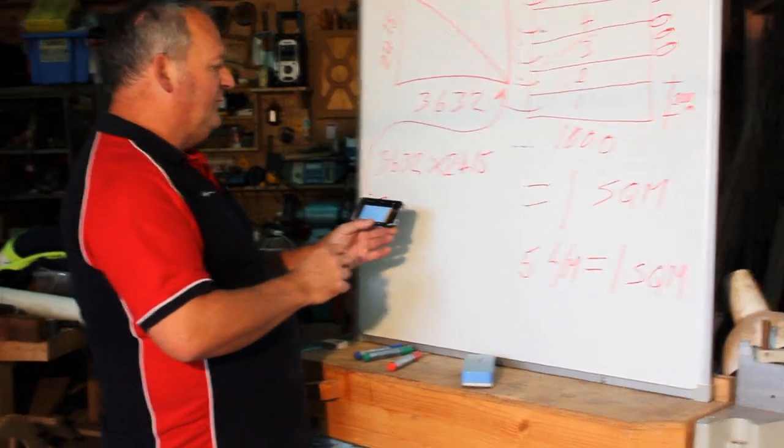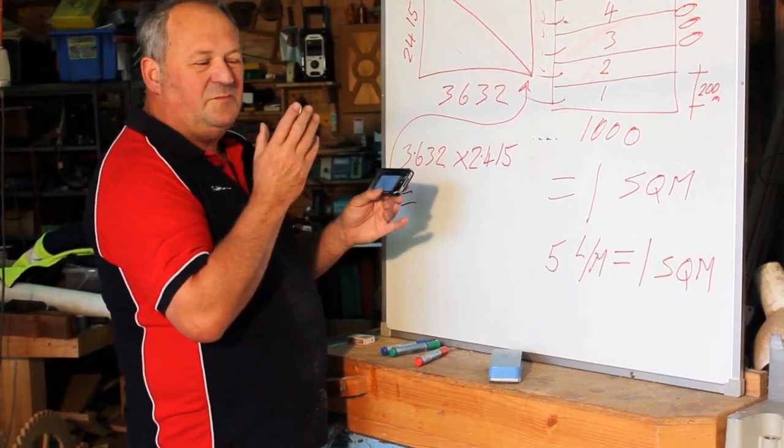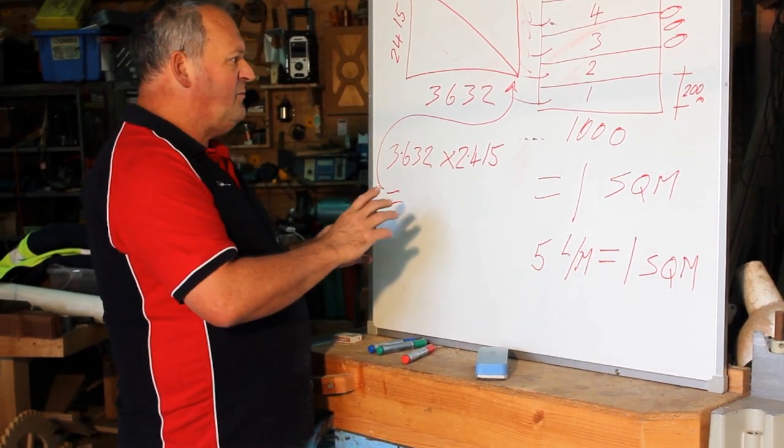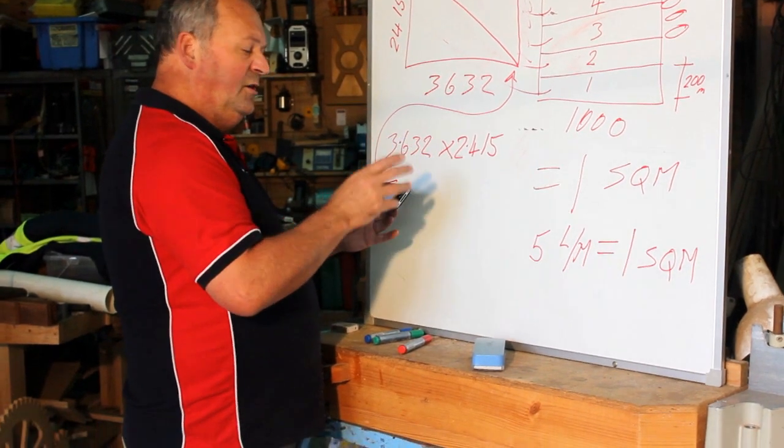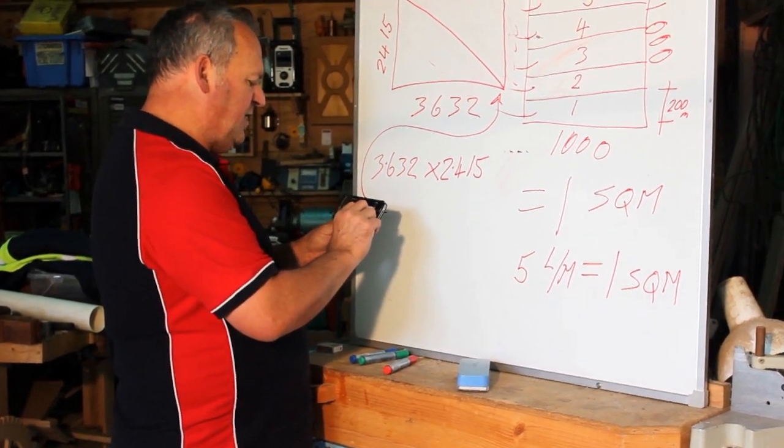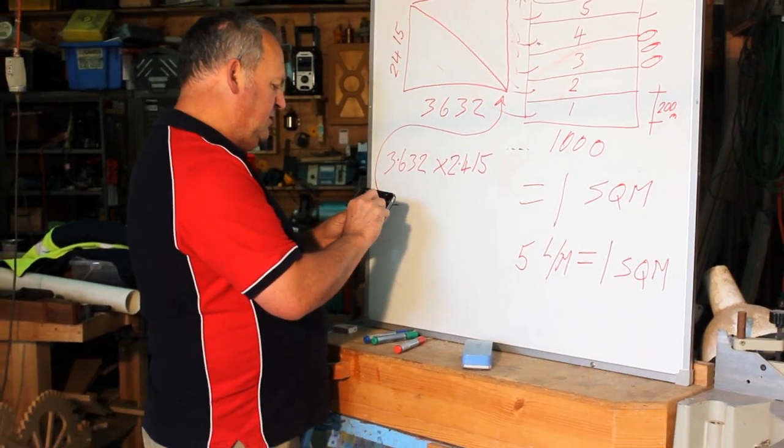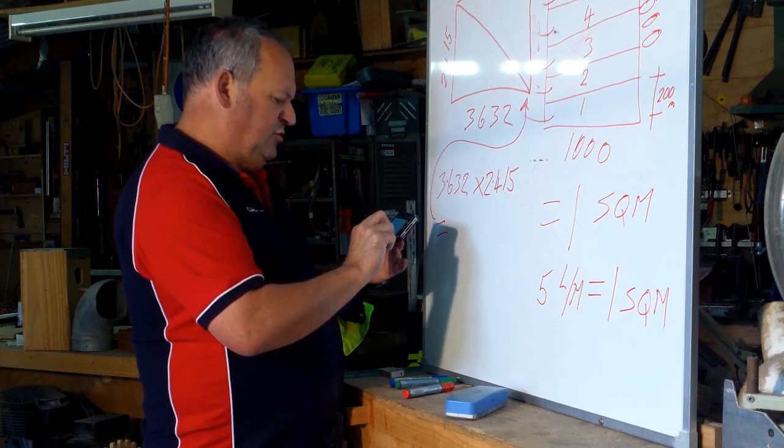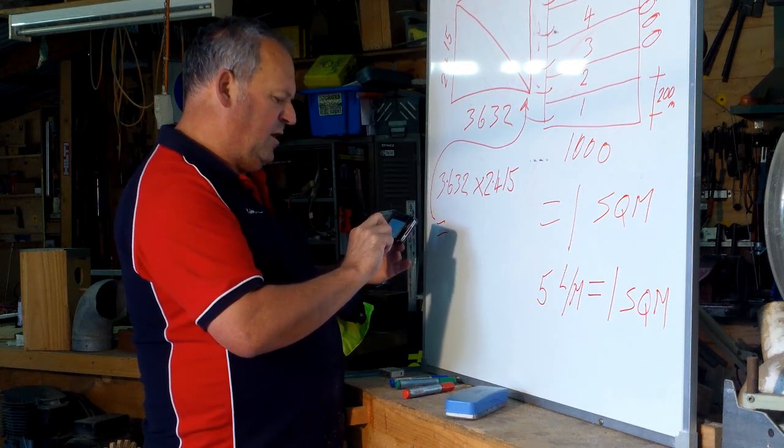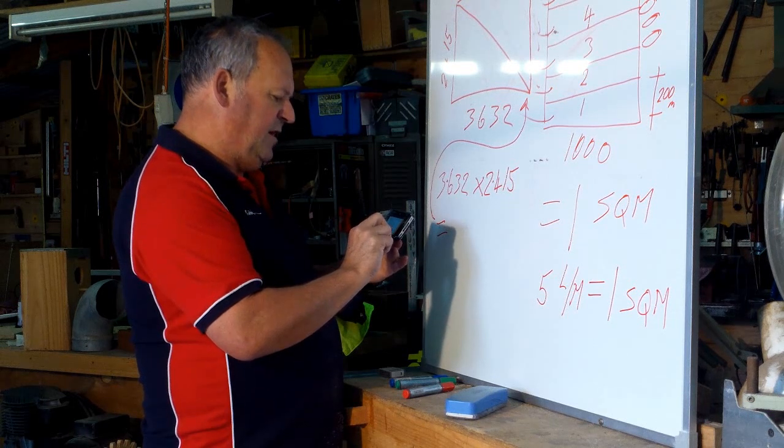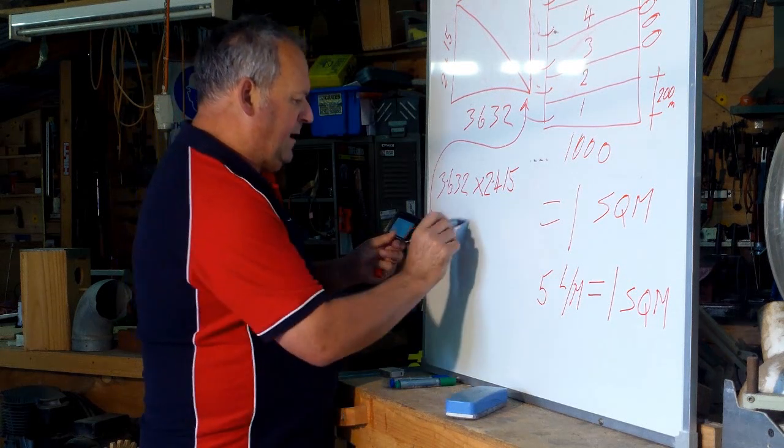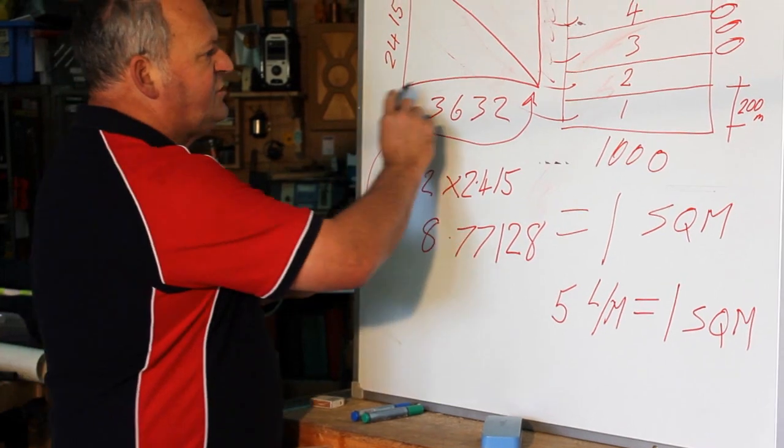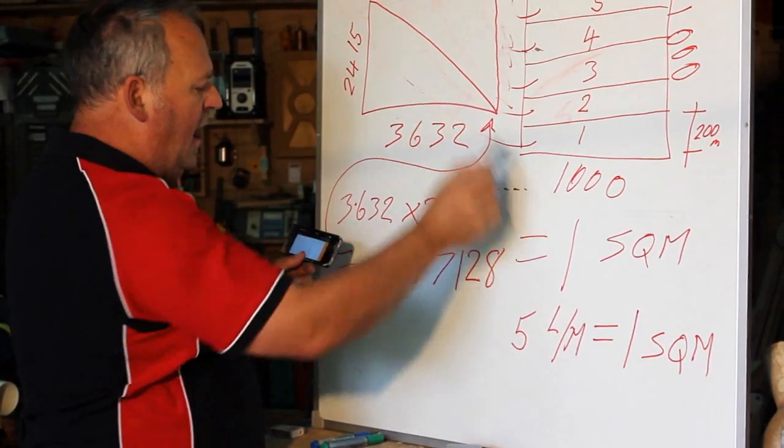Because I want the answer in square metres, not millimetres. The calculator is the most useful tool that we have. We should be having this all the time and making the most of it. 3.632 times 2.415 equals 8.77128. But, that's the whole, and we only want half of it.